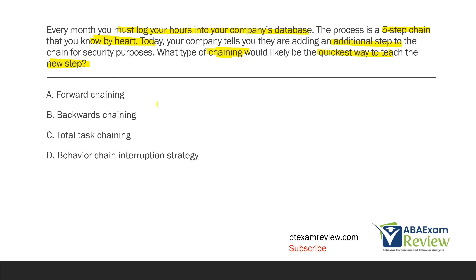A — forward chaining; B — backward chaining. In both forward and backward chaining, we're going to be teaching individual steps, but you already know all five steps. So why not do C and teach the entire task chain all at once? With total task chaining, we're teaching the entire chain and can then hone in on specific steps — in this case, likely the new additional sixth step. What about behavior chain interruption strategy? You don't necessarily teach new responses in that strategy. The quickest way, given you already know five of the six steps, is through total task chaining.